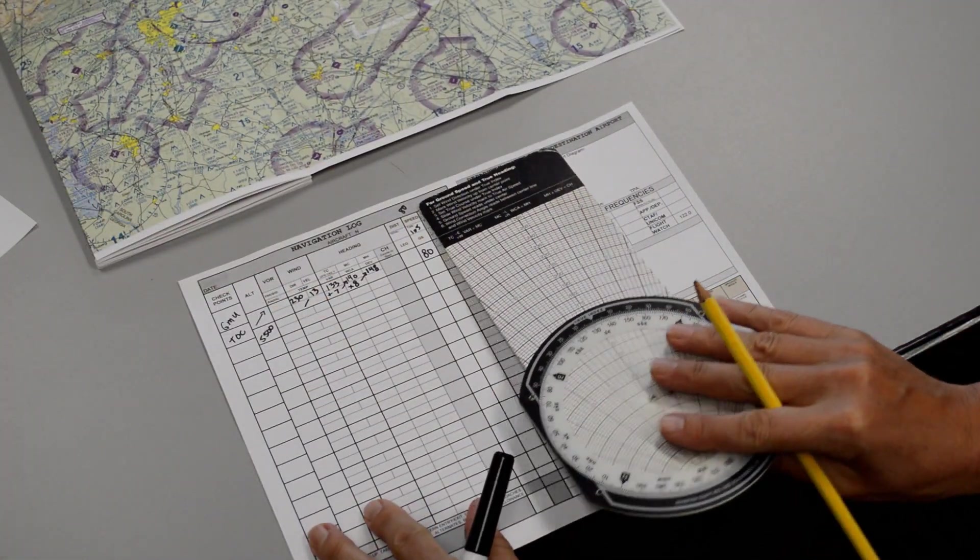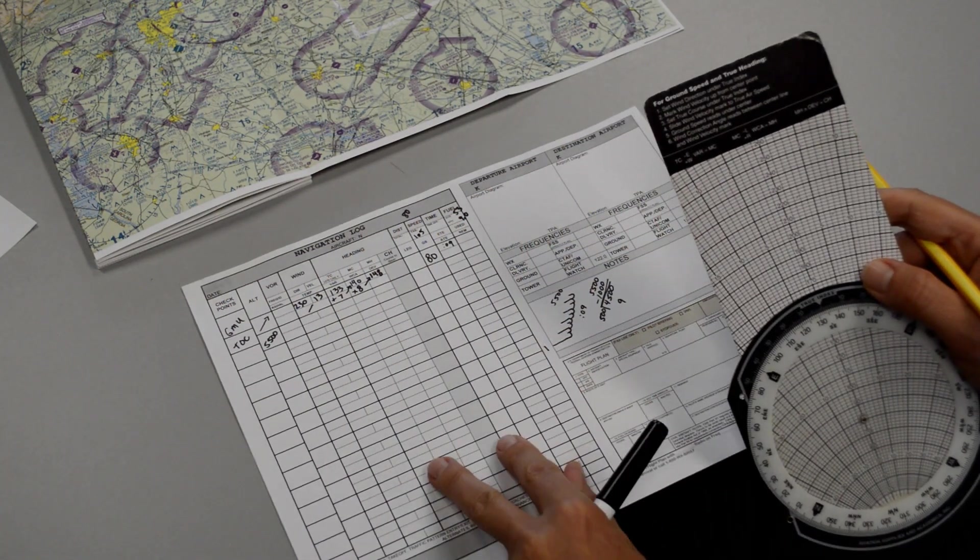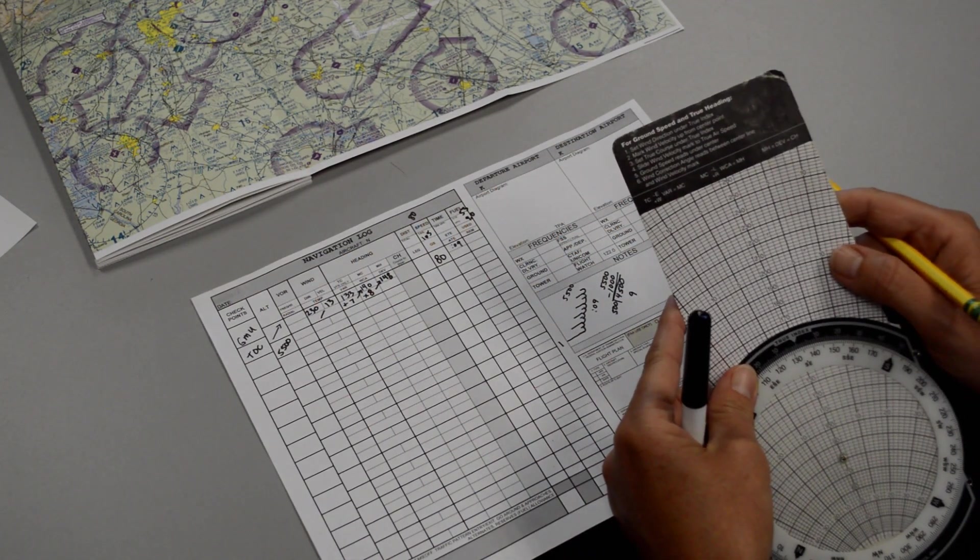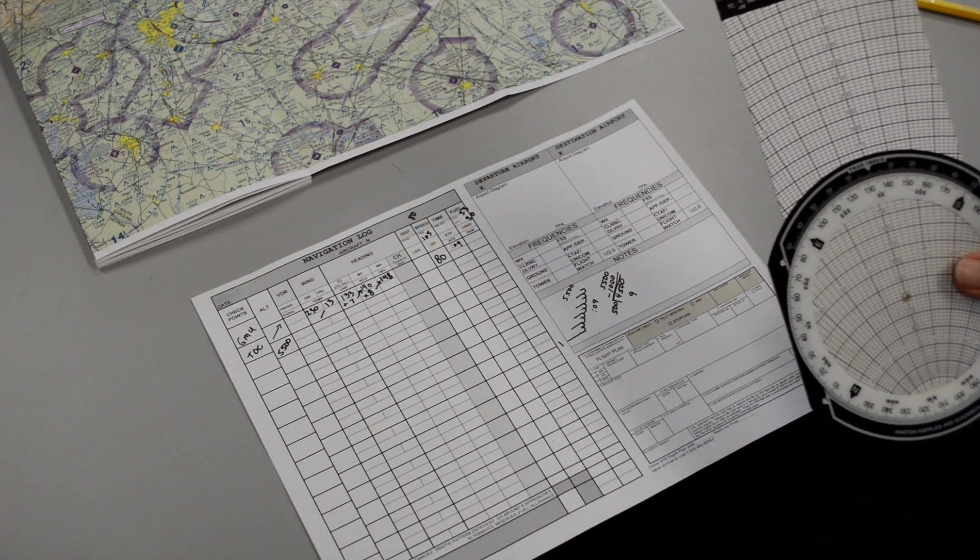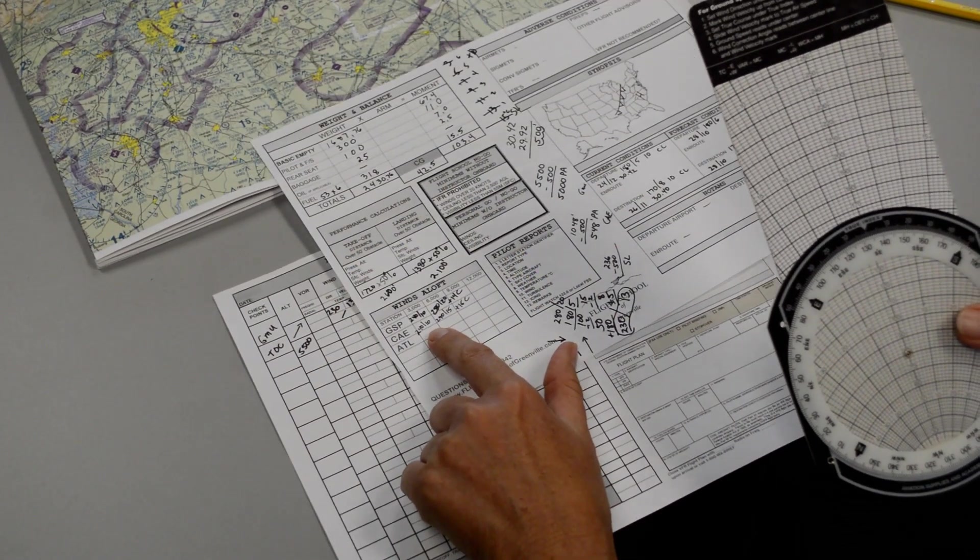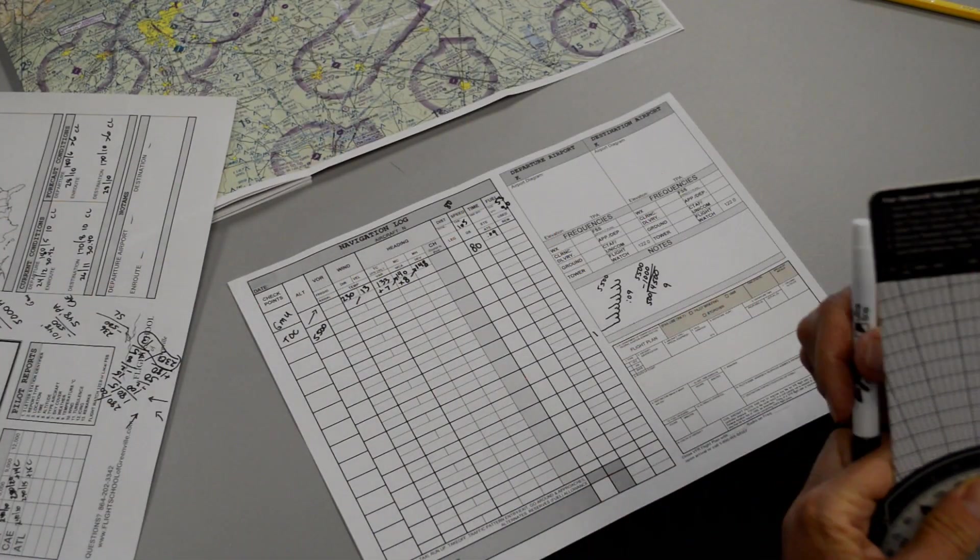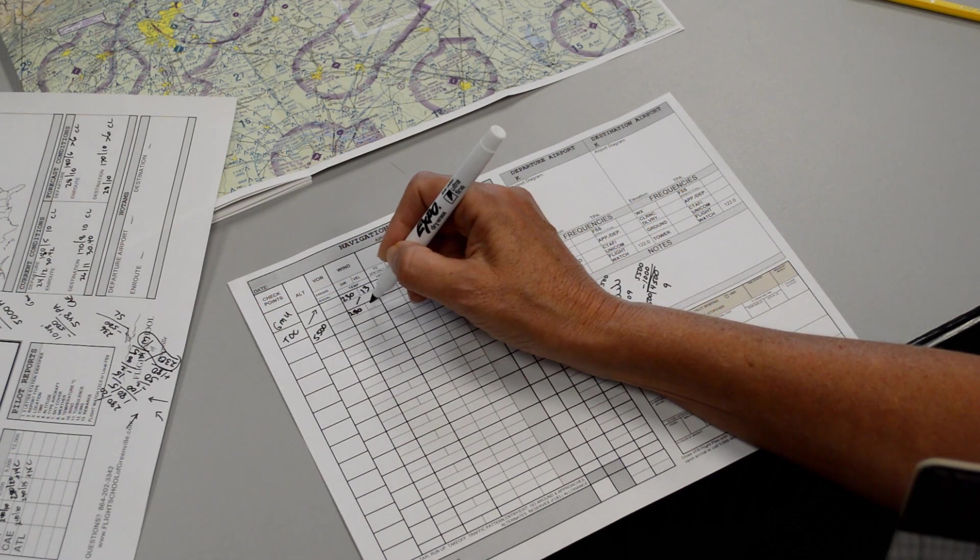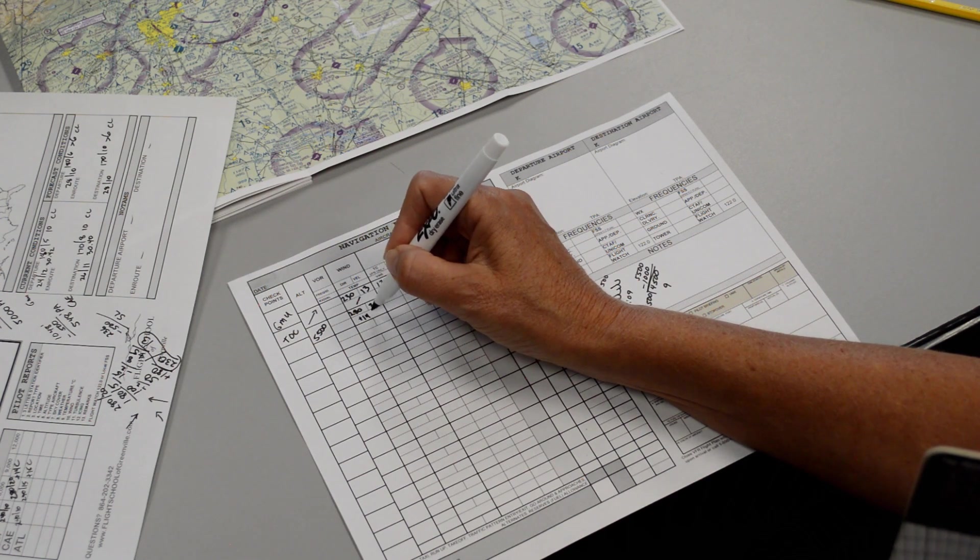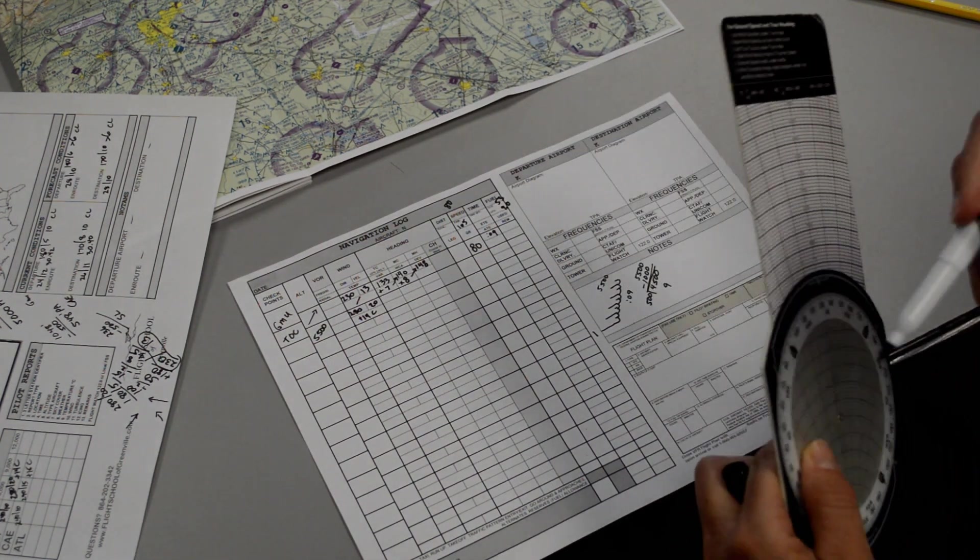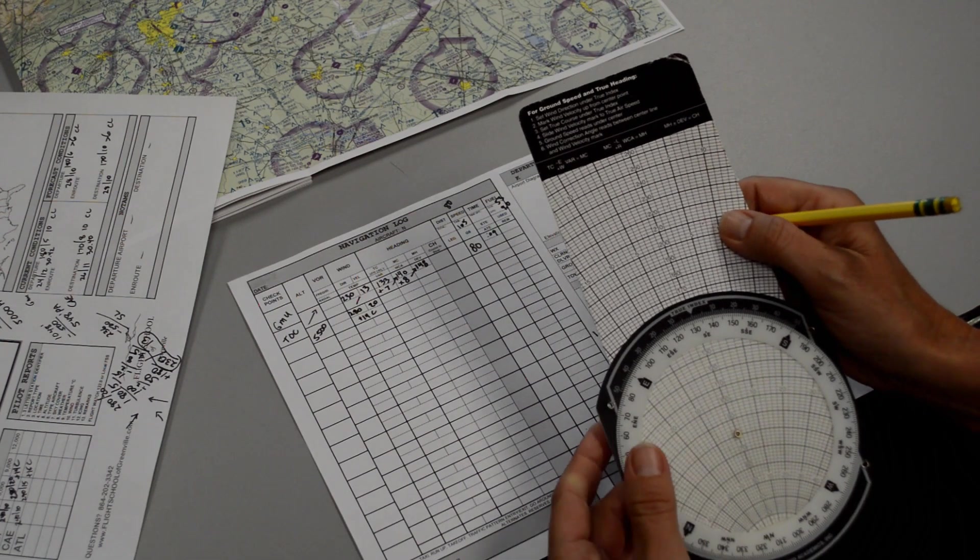Now we need to do the same thing, but it will be for our cruise. So I'm going to erase the pencil mark that I made and we'll start over again with number 1. So number 1 said set wind direction under the true index. And remember we had written the wind down from the weather briefer. The winds aloft at our altitude were around 280 at 20. So we can fill that in, 280 at 20. And the temperature that the weather briefer gave us was plus 14 degrees Celsius. So number 1 says set wind direction under true index. The wind direction is 280.